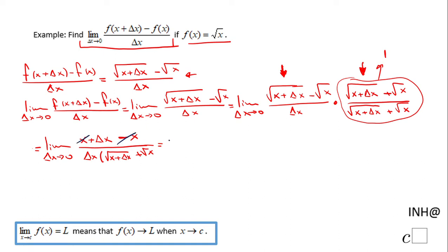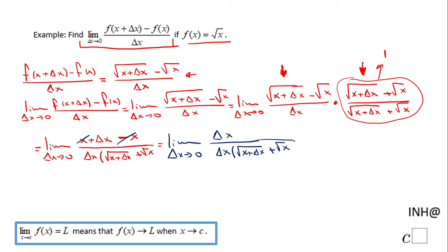We have the limit as delta x approaches zero of delta x over delta x times the quantity square root of x plus delta x plus square root of x. Notice the delta x cancels out, and we are left with the limit as delta x approaches zero of one over square root of x plus delta x plus square root of x.